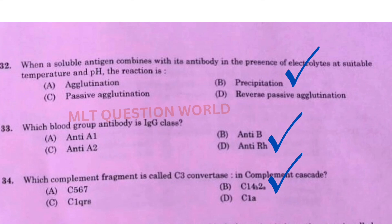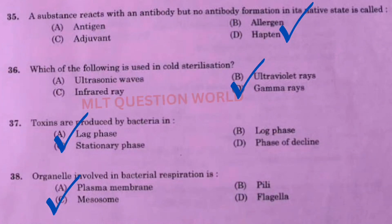Next one: Which complement fragment is called C3 convertase in complement cascade? The right answer is option B, C1,4B,2A. Next question: A substance that reacts with an antibody but causes no antibody formation in its native state is called? The right answer is option D, hapten.